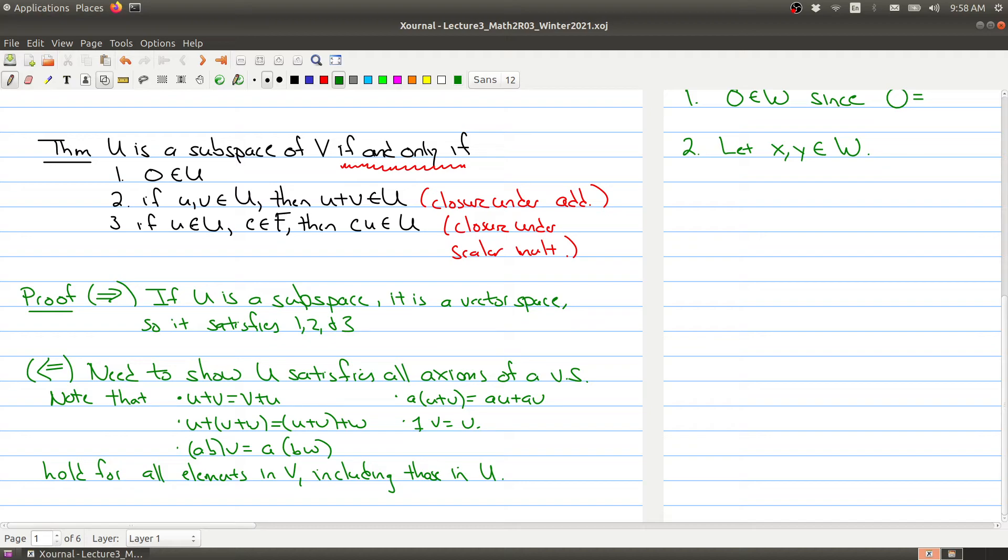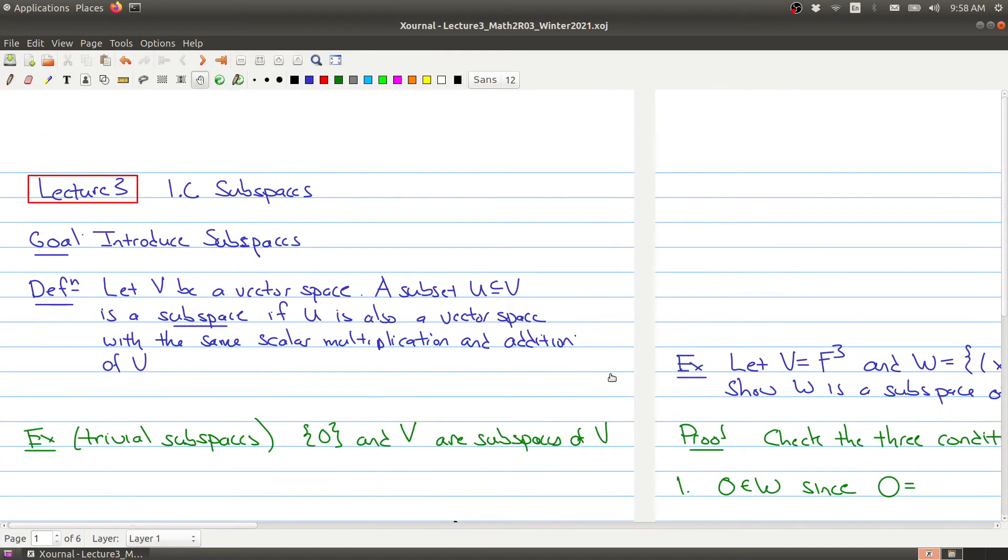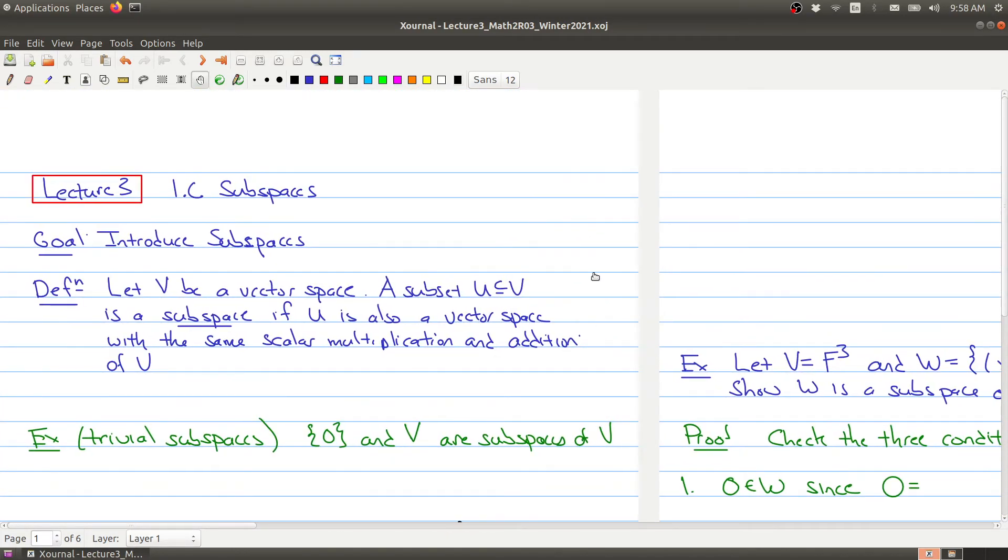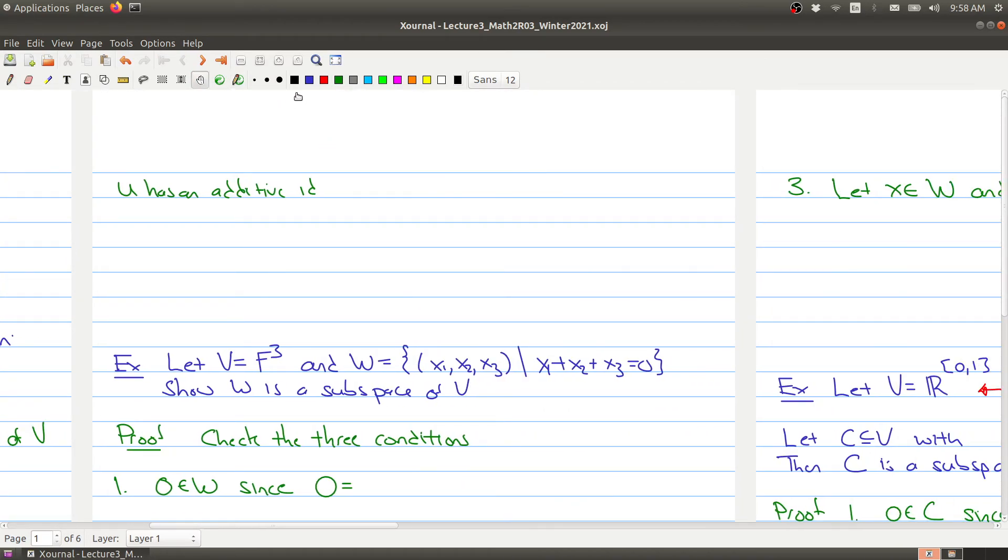So then we have to kind of fill in the missing axioms. And one of the missing axioms is that there's an additive identity. But that's actually one of the given conditions, right? So U has an additive identity by 1. That's one of the hypotheses, so it has a zero element.